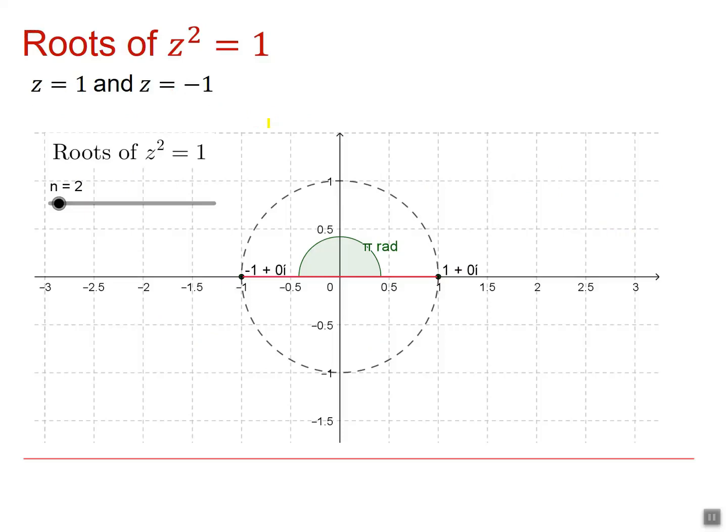Let's have a look at one of the simplest polynomial equations, Z squared equals 1. It has two roots, Z equals 1 and Z equals minus 1. If I show those on an Argand diagram, they'll appear here and here.